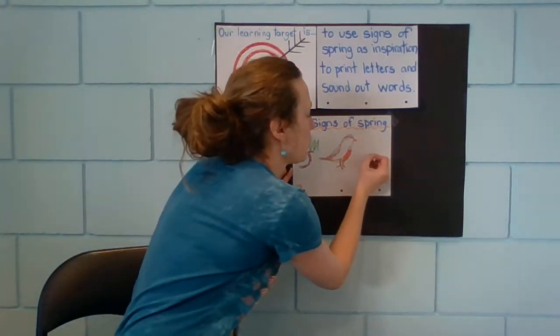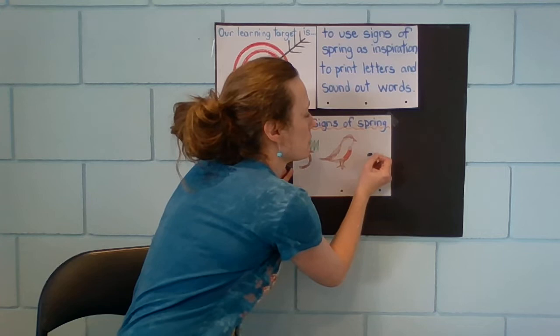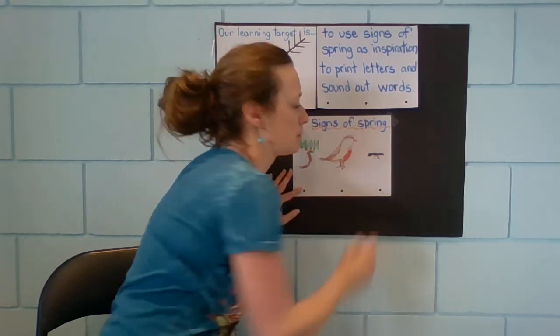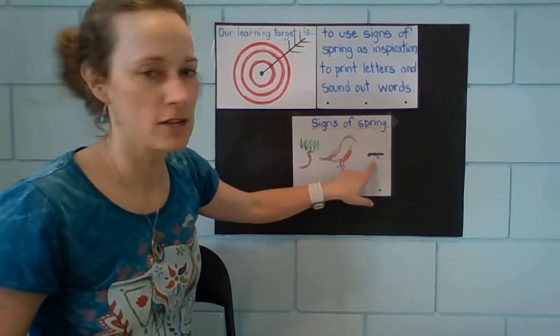Ants. All right. We're going to look for ants out there. There we go. And they have little legs. All right. There's our ants.